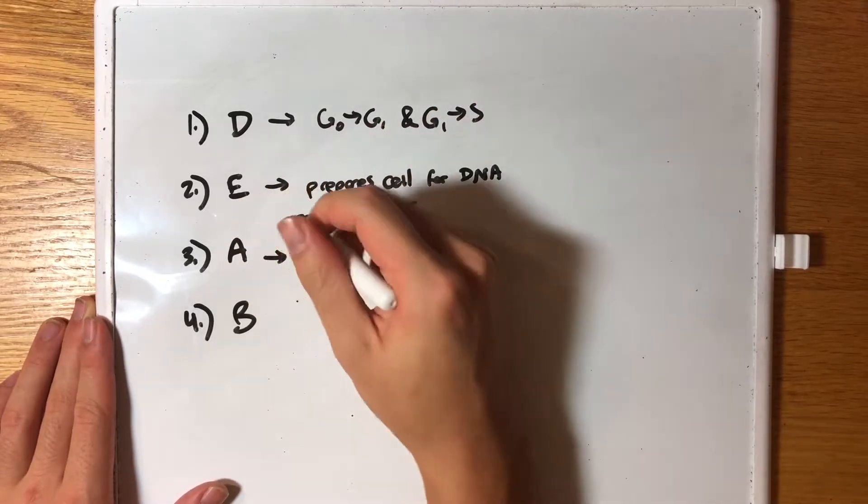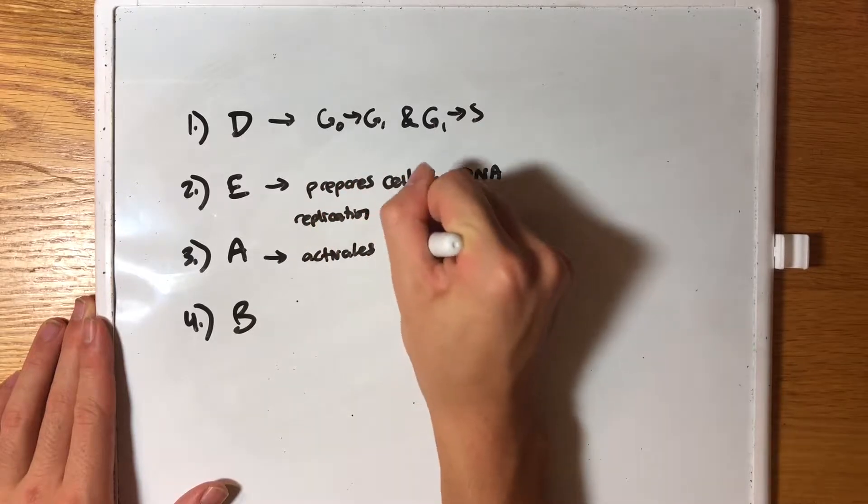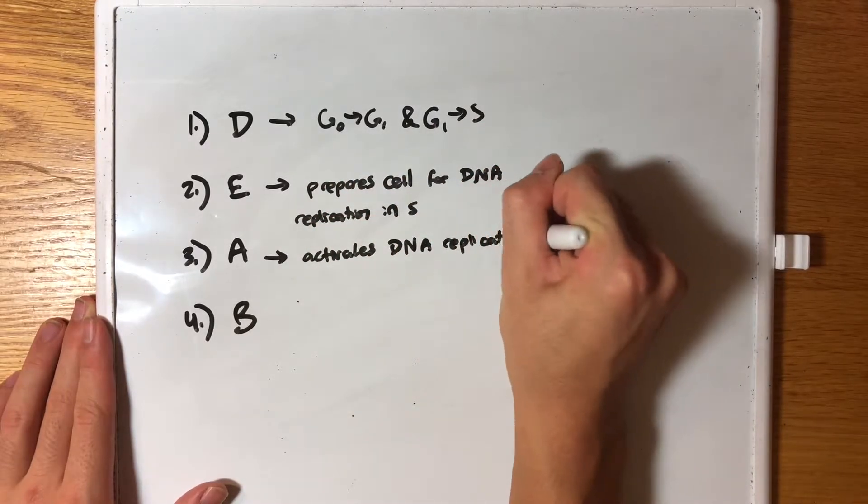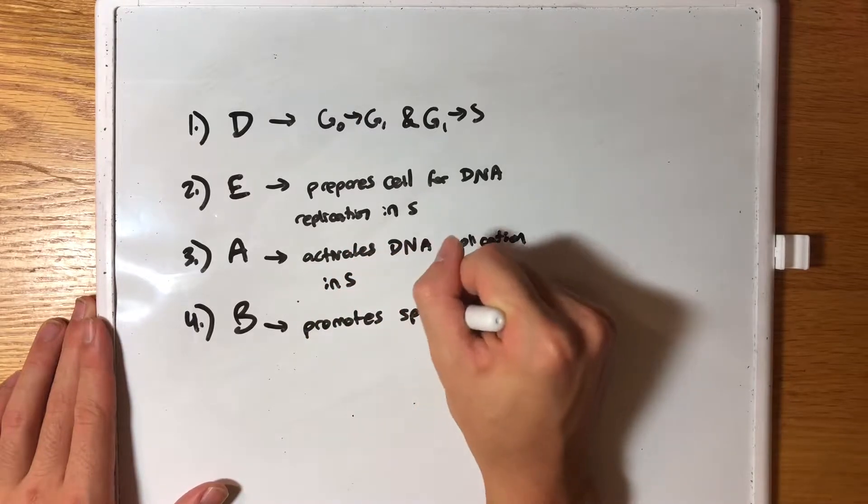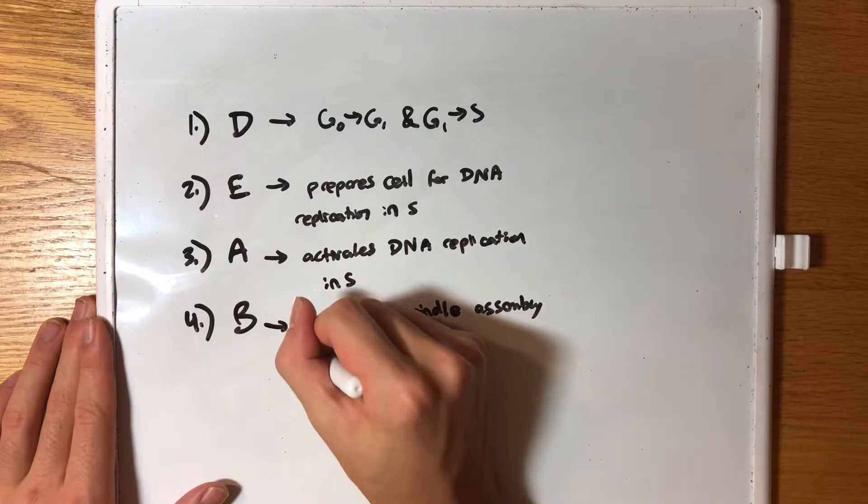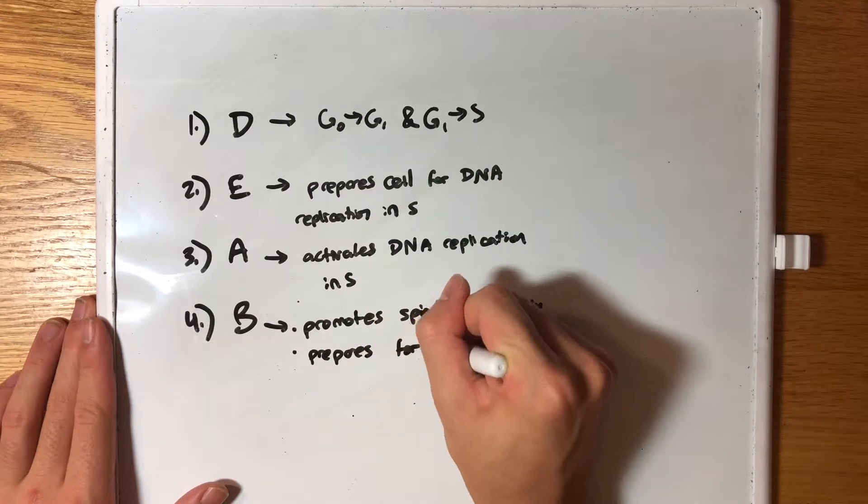A activates DNA replication in the S phase. And finally, B promotes spindle assembly and prepares the cell for mitosis, the division at the end of mitosis.